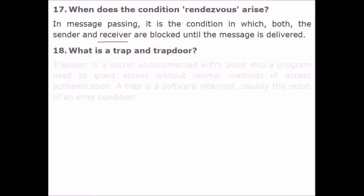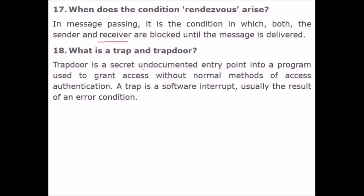What is a trap and a trapdoor? A trapdoor is a secret, undocumented entry point in a program used to grant access without normal methods of authentication. It is an entry point that has not been made public. A trap is a software interrupt, usually the result of an error or exception condition.